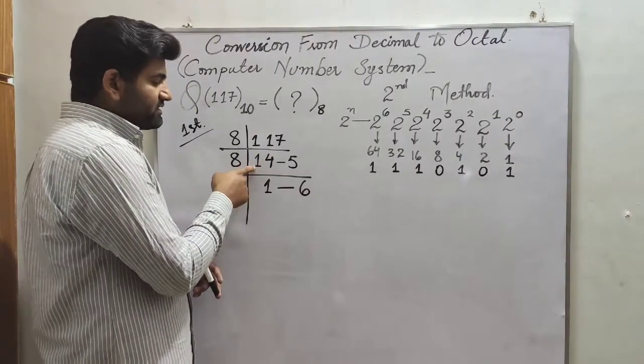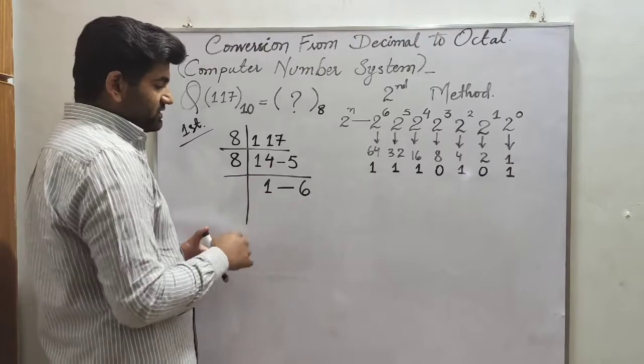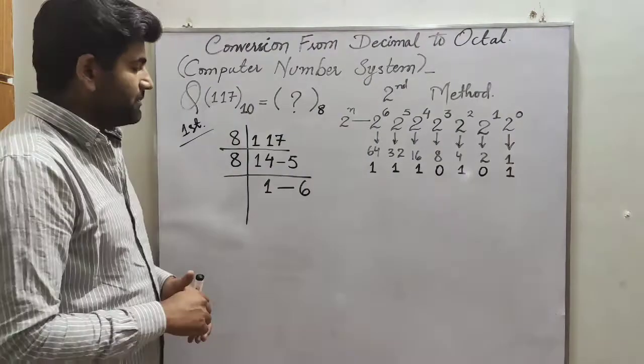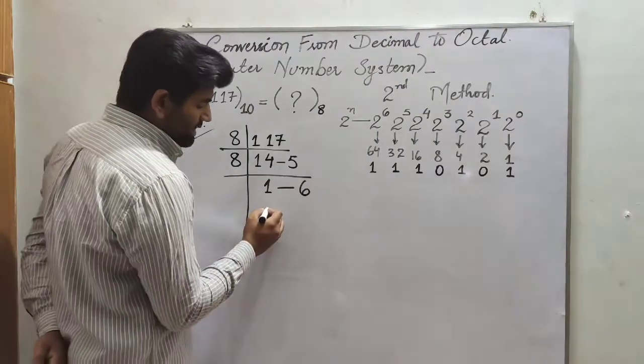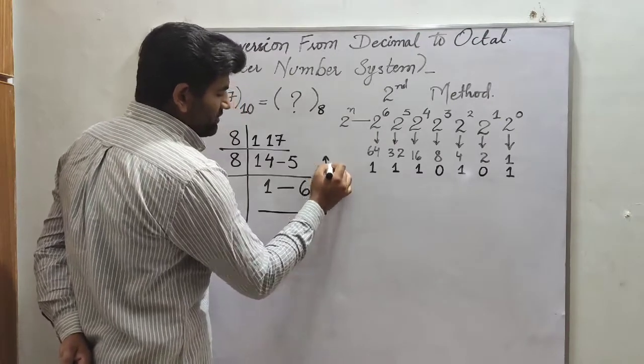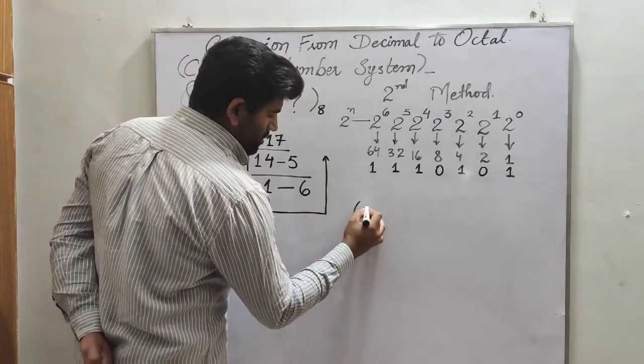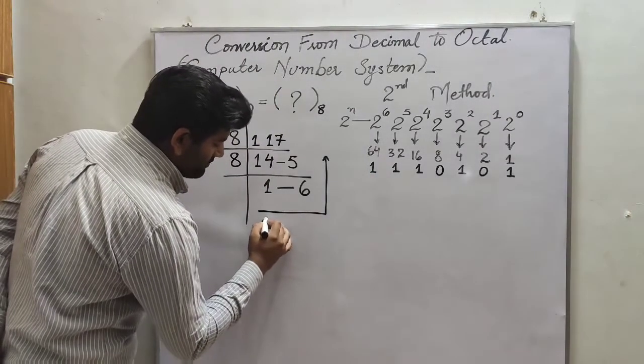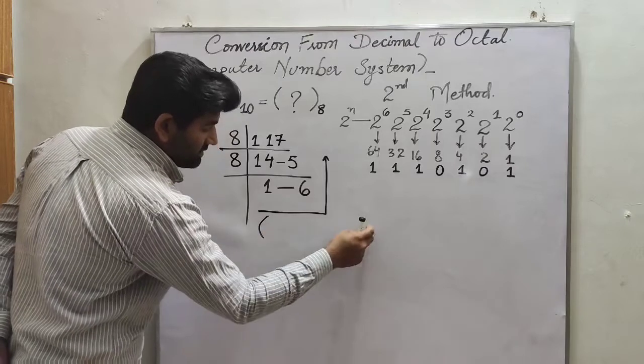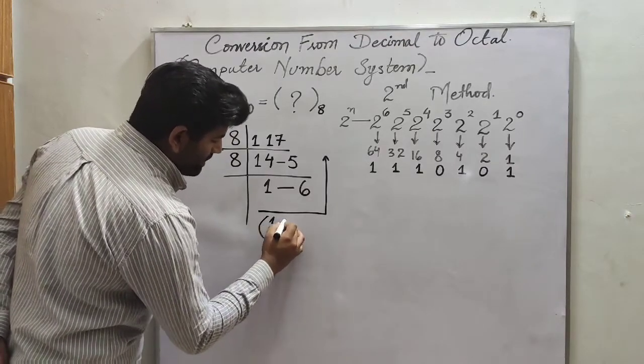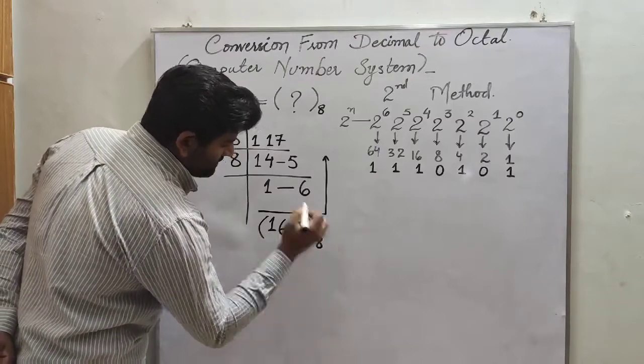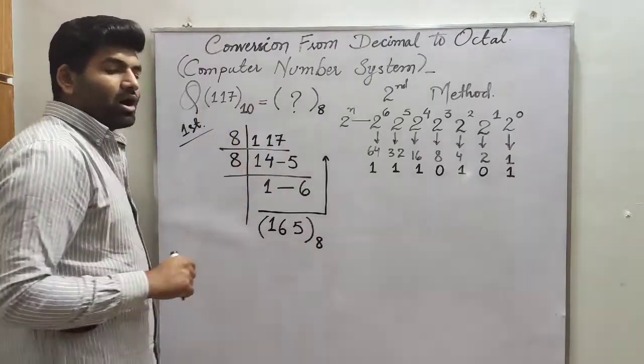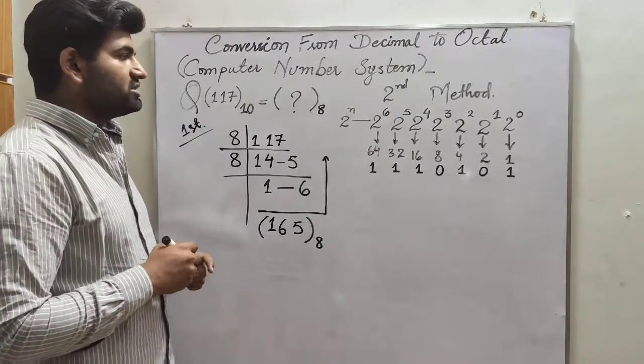So we wrote 14 and 5. 8 into 14 is 112 plus 5 is 117, same as it is. This is how we can take 117 divided by 8 to convert it into octal number. So the answer will be 1, 6, 5 to the base 8 basically. This is the conversion of this decimal number into octal numbers.